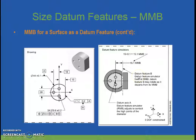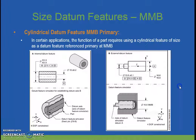So this was a very special case, which probably won't occur very often. A cylindrical datum feature MMB primary: in certain applications, the function of a part requires using a cylindrical feature of size as a datum feature reference primary at MMB.